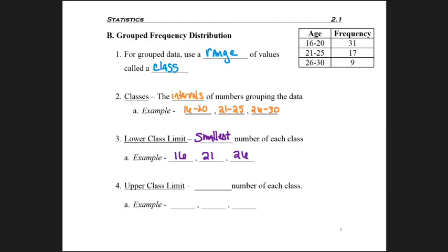And just as you would guess, the upper class limit, or the class upper limit, you can kind of swap the order of those three words, is the largest number in each class. So for this particular table, it would be 20, 25, and 30.